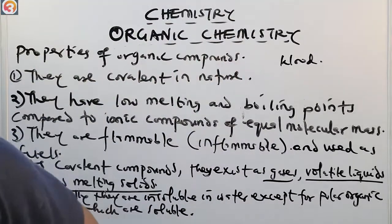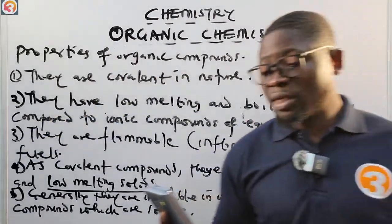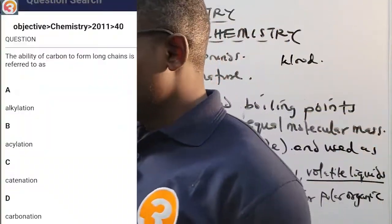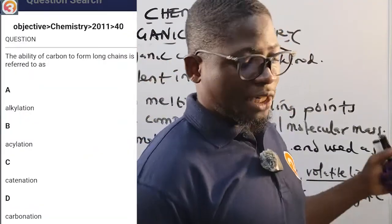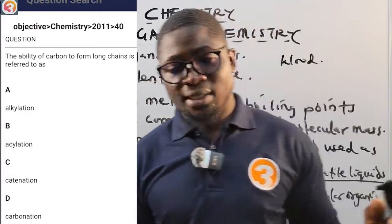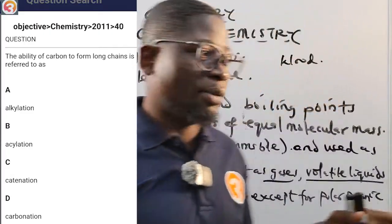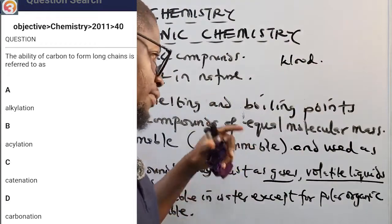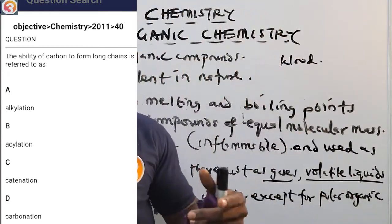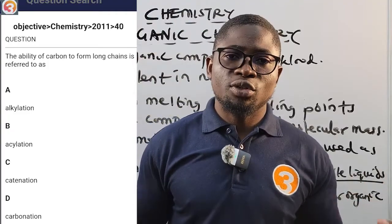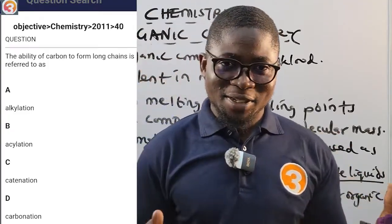To end this class, let's return to the question from the app: Chemistry 2011, question 40 — 'The ability of carbon to form long chains is referred to as A) alkylation, B) isolation, C) catenation, D) carbonation.' The answer is C — catenation. Please know that. In the next episode we'll continue looking into organic chemistry. Thank you for watching, I'll see you there.